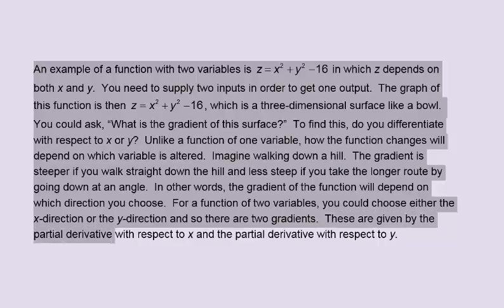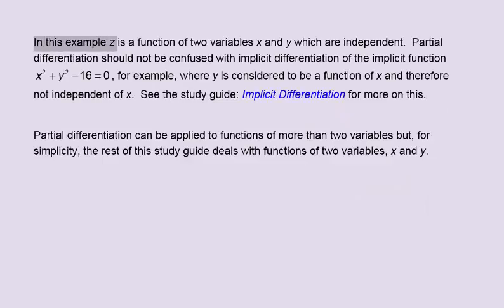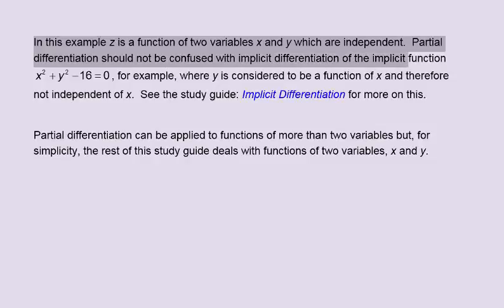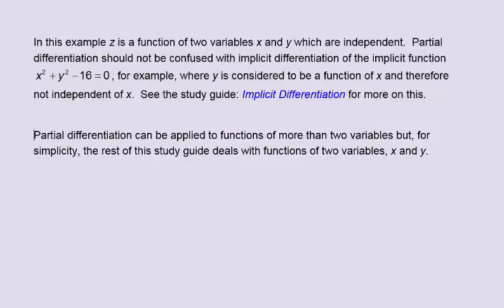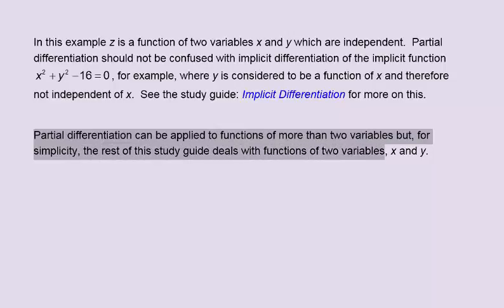These two gradients are given by the partial derivative with respect to x and the partial derivative with respect to y. In this example, z is a function of two variables, x and y, which are independent. Partial differentiation should not be confused with implicit differentiation of, for example, x squared plus y squared minus 16 equals zero, where y is considered a function of x and therefore not independent. See the study guide Implicit Differentiation for more on this. Partial differentiation can be applied to functions of more than two variables, but for simplicity this guide deals with functions of two variables, x and y.